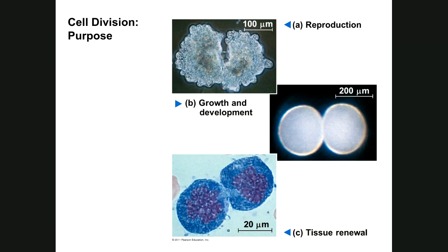The textbook notes that this type of cell division involving mitosis does play a role in reproduction for unicellular eukaryotic organisms such as the protist amoeba. But I'm going to focus on us. In human beings, the purpose of the form of cell division that involves mitosis is growth, development, and tissue renewal. For reproduction in humans and animals, we'll save that for the second type of cell division.